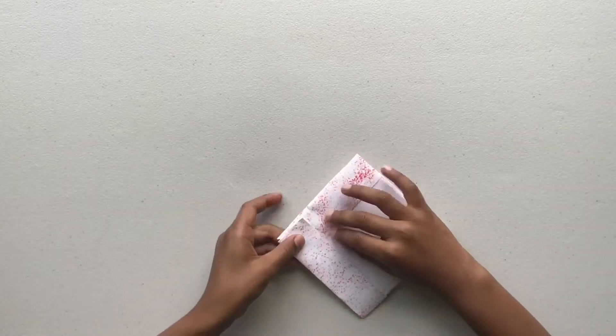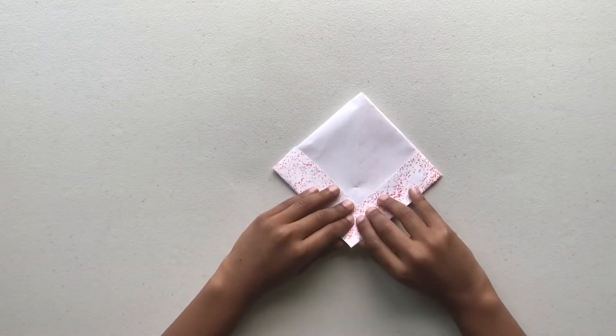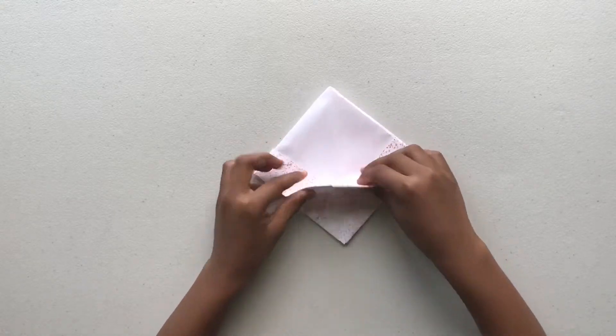Do the same thing on the other side of the paper. Fold up the bottom flaps halfway through.